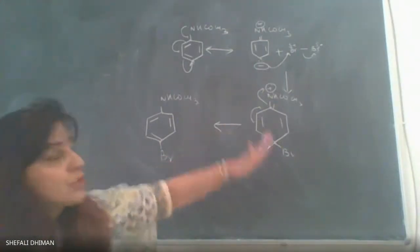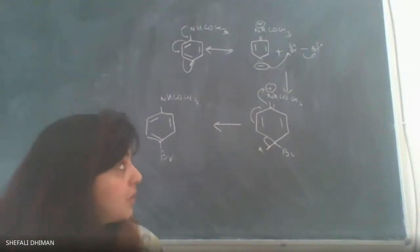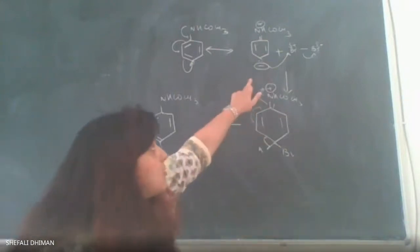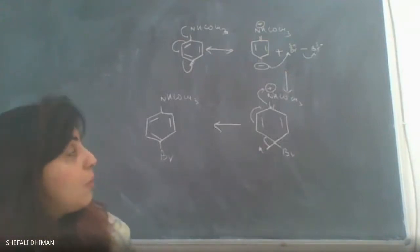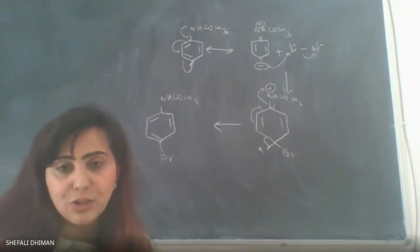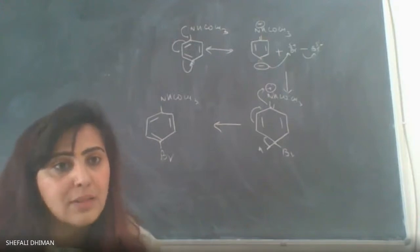This is the reaction where bromination takes place for aromatic moieties. What is important here is you must know the mechanism of the reaction. Remember, it is a negative charge which will react with the positive charge.